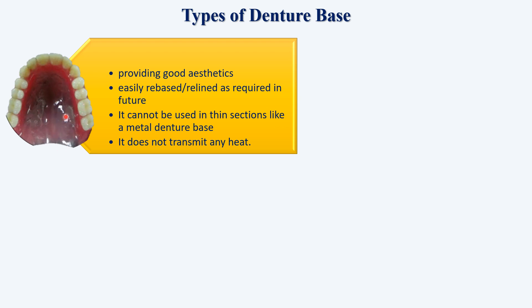Now there are different types of denture base. The first is the acrylic type. It provides good aesthetics — you feel like it's your own palate. It can be easily re-based or re-lined in the future when there is wear and tear or age-related changes in tissues. A disadvantage is that it cannot be used in thin sections like metal — acrylic requires bulk.